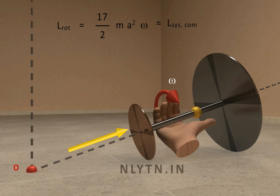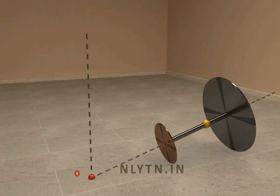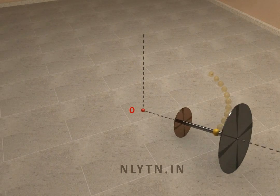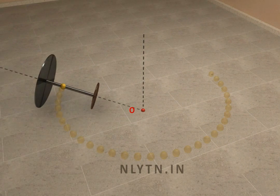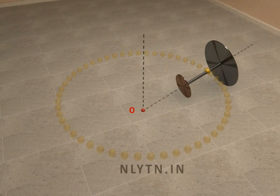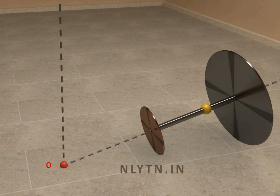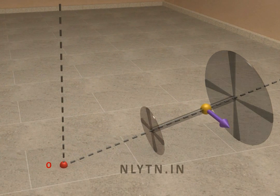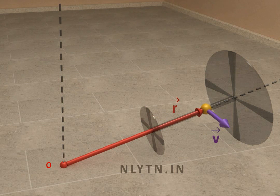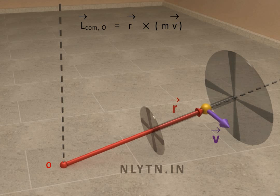Now let us consider the angular momentum of the center of mass of the entire system with respect to point O. Here we can see that the center of mass is moving in a circular path. If we consider the tangential velocity of the center of mass to be equal to V, and the position vector of the center of mass from point O to be equal to R, then the angular momentum of the center of mass with respect to point O will be equal to this term. Note that here V is perpendicular to R, and thus the angular momentum of the center of mass with respect to point O will lie along this line.